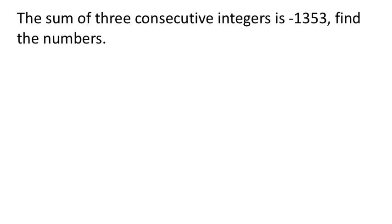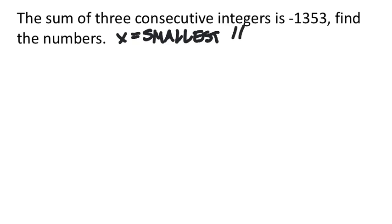The sum of three consecutive integers is negative 1,353. Find the numbers. I'm going to say that the smallest of the three numbers is x, because I want to be able to write an equation from this. It may not be the most efficient method, but I hope it helps.